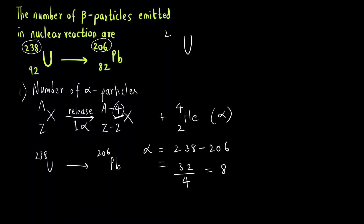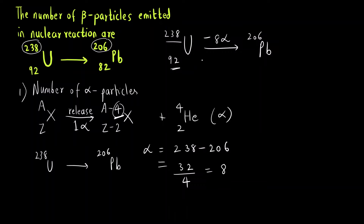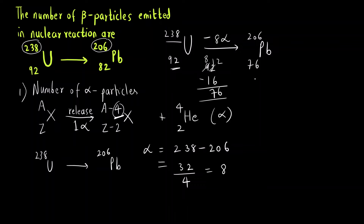Starting with Uranium-238, atomic number 92, and removing 8 alpha particles: the atomic mass decreases from 238 to 206, and the atomic number decreases by 8 × 2 = 16 units, so 92 minus 16 gives 76. This is the intermediate species. However, we want to reach lead, which has atomic number 82.